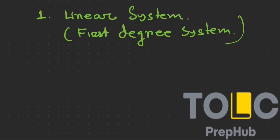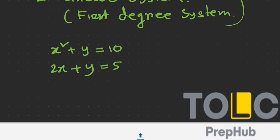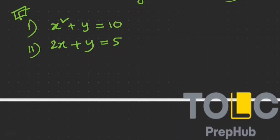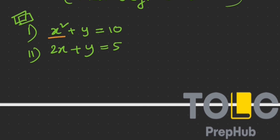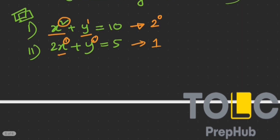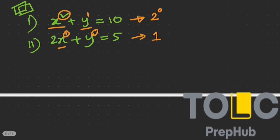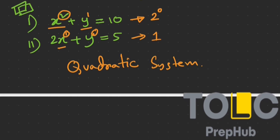Next, let's talk about the quadratic system. Let's write two equations: x squared plus y equals 10, and 2x plus y equals 5. For these two equations, the first term of the first equation has power 2 and the second term has power 1, so the maximum power is 2 and the degree of that equation is 2. Remember, always consider the maximum degree, not the lowest. Since at least one equation has a degree of 2, this is called a quadratic system.